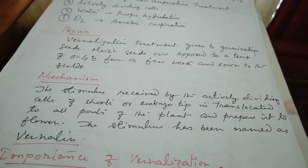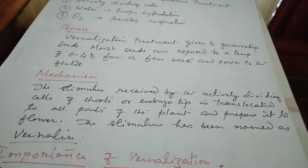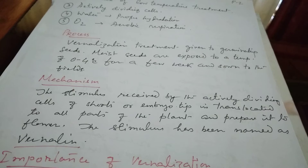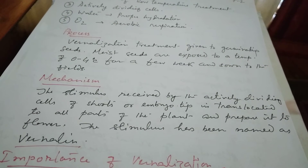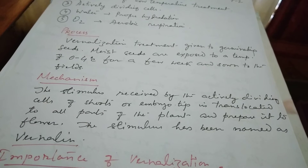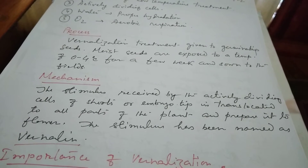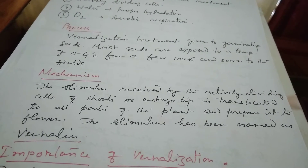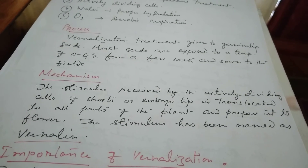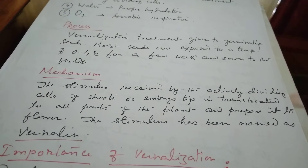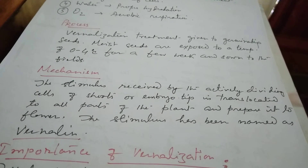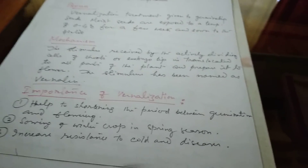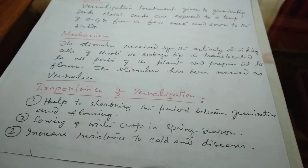Mechanism of vernalization: the stimulus is received by the actively dividing cells of shoots and the embryo tip, and is then translocated to all parts of the plant, preparing it to flower. This stimulus has been named vernaline.